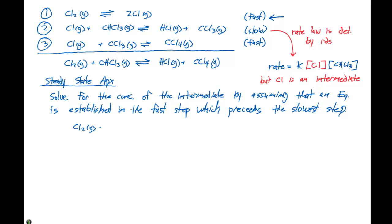We have Cl2 gas in equilibrium with 2Cl gas. Remember, an equilibrium is gonna have a constant of K1 for the forward reaction and K to the minus one for our reverse reaction. So we can break this down into two parts.